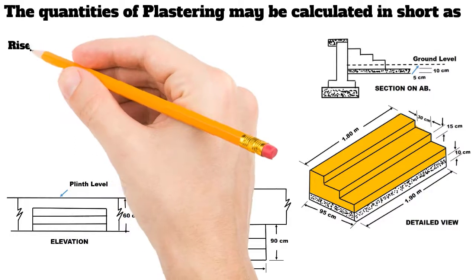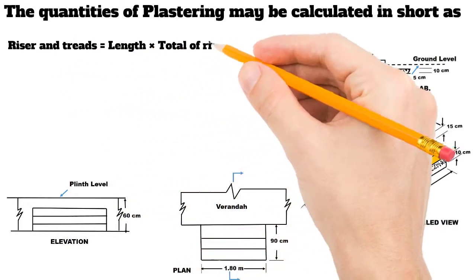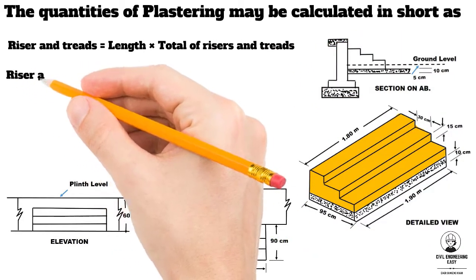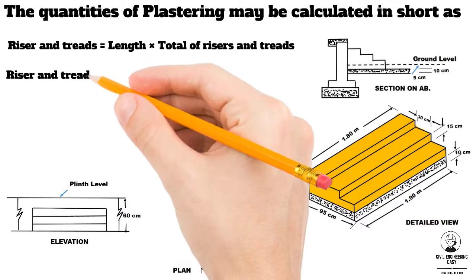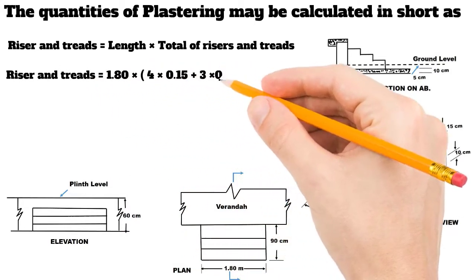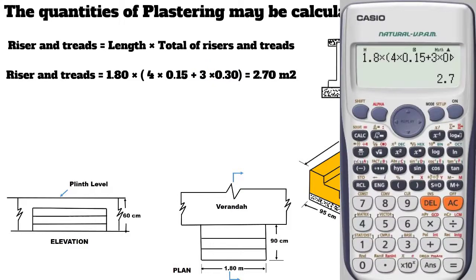Similarly, the quantity of plastering may be calculated in short for risers and treads of steps: length × (total number of risers + total number of treads). Putting in the values: 1.80 × [(4 × 0.15) + (3 × 0.30)], where 4 is the number of risers, 0.15 meter is the height of each riser, 3 is the number of treads, and 0.30 meter is the width of each tread. The total quantity of plaster for risers and treads equals 2.70 square meter.